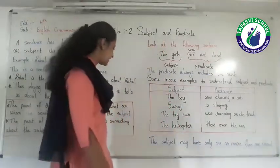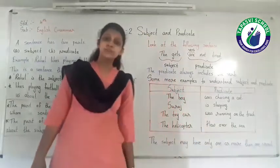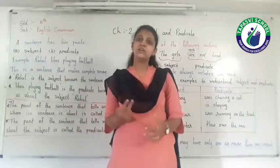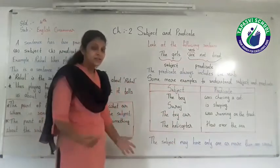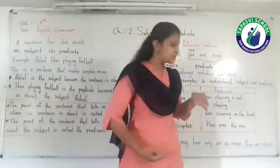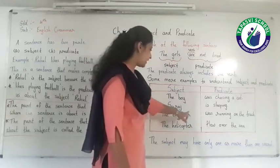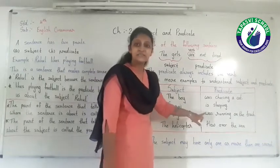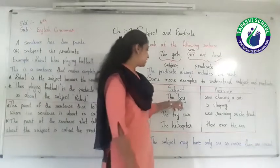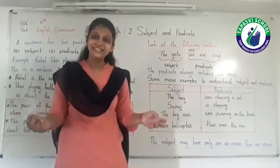The subject may have only one or more than one word. For example, 'Suraj' — the subject is one word. 'The boy' — the subject is two words. 'The toy car' — the subject is three words. 'The helicopter' — the subject is two words. So a subject can have one, two, or more than two words.